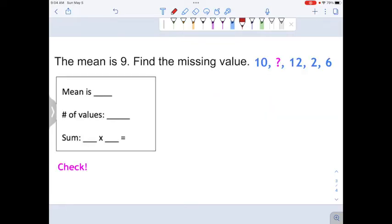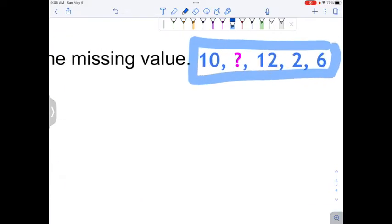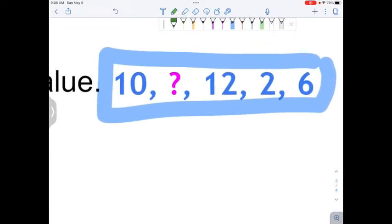Let's try a problem. This problem says the mean is 9. I'm going to write that down. The mean is 9. Find the missing value. Here are the numbers that we know so far: 10, question mark, 12, 2, and 6. So although we don't know the question mark, we do know how many numbers there are.